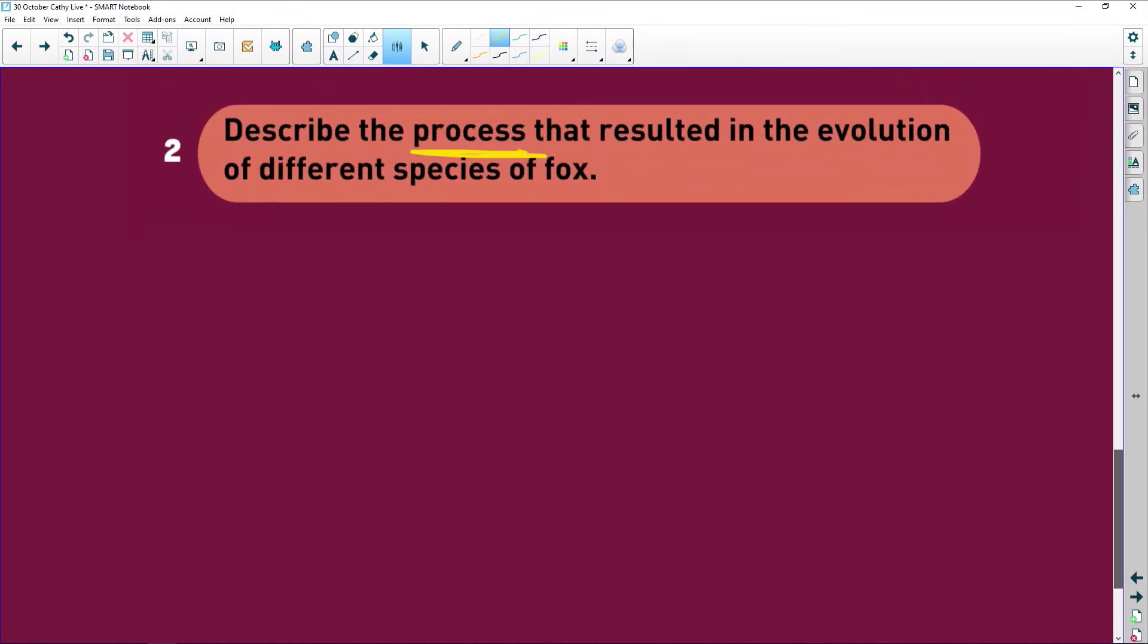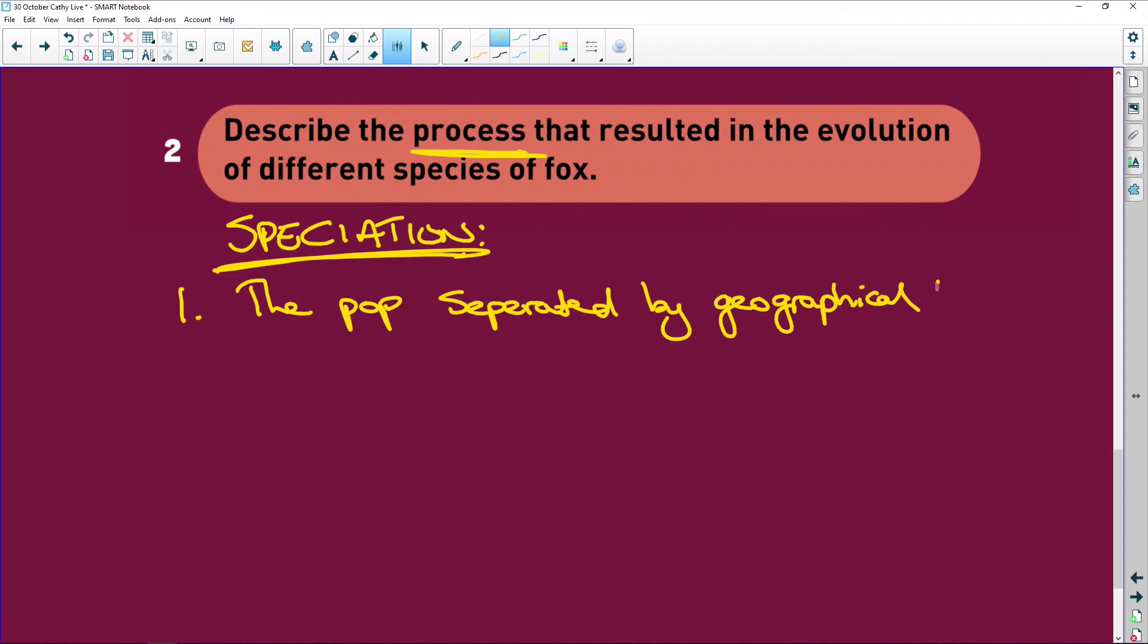Describe the process that resulted in the evolution of the different species of fox. It could be any species. So we're looking at speciation, and this is how you're going to answer any question on speciation. Number one: the population separated by geographical barrier. Write this down. That's point one, doesn't matter what species it is.